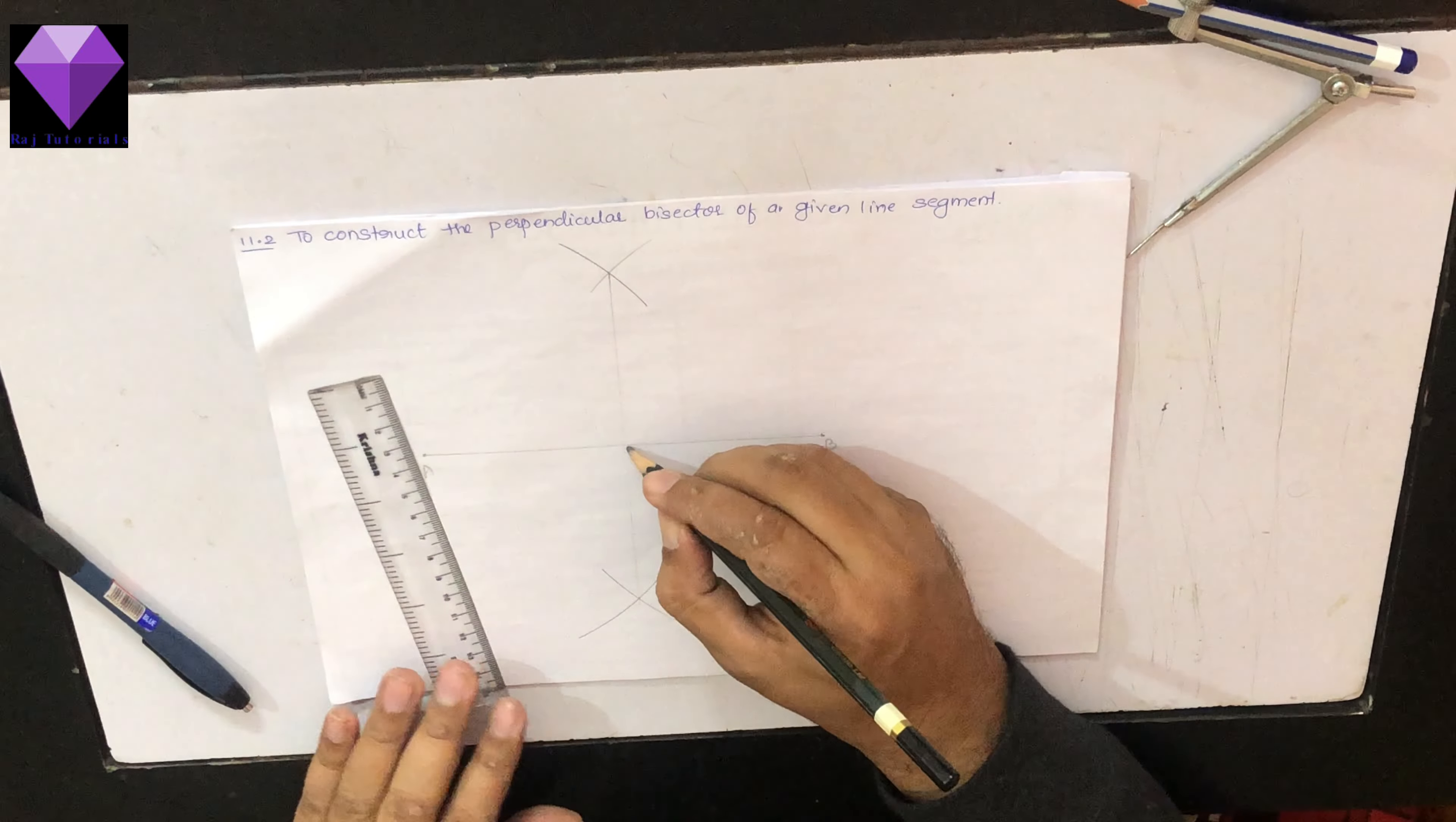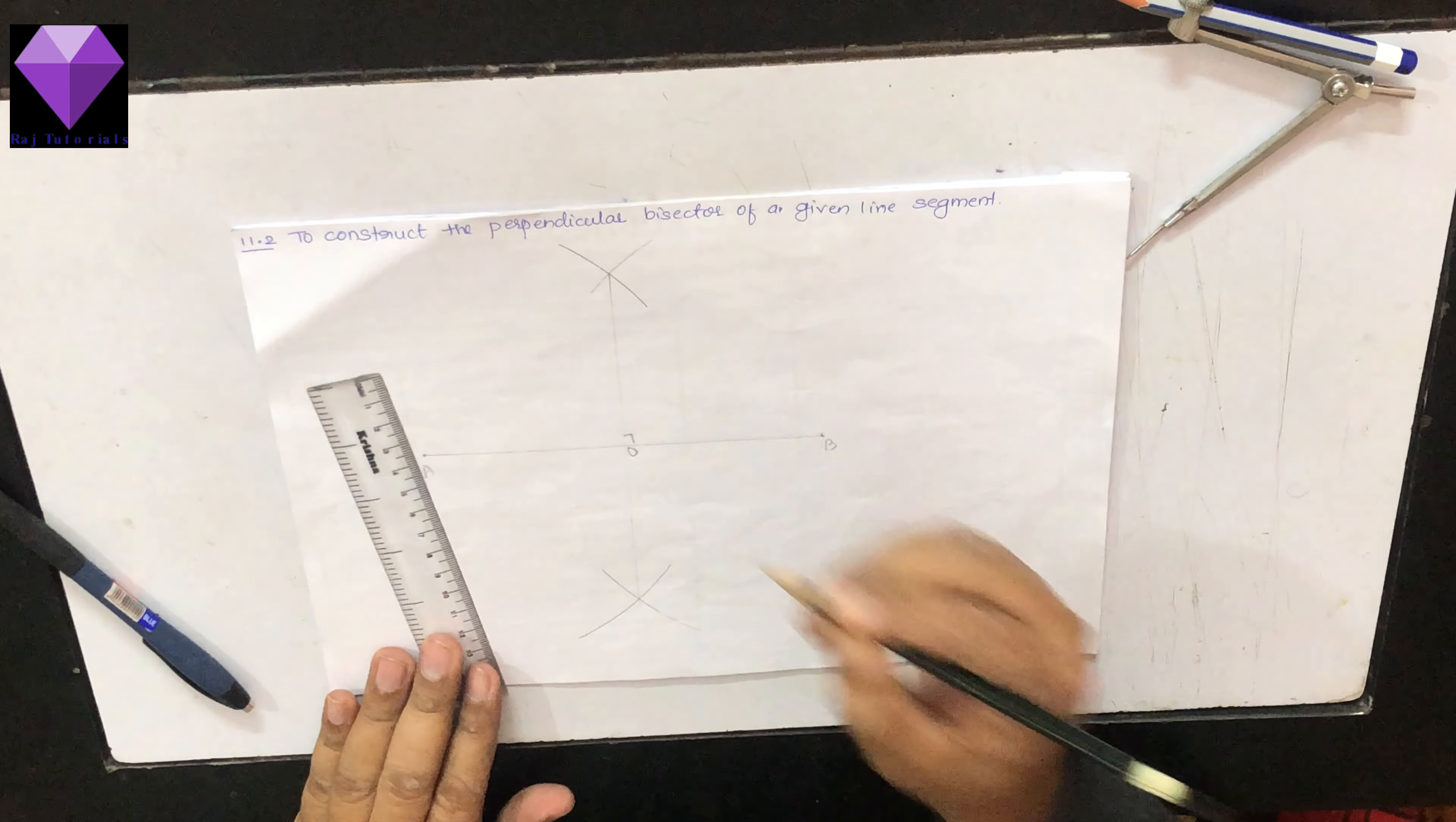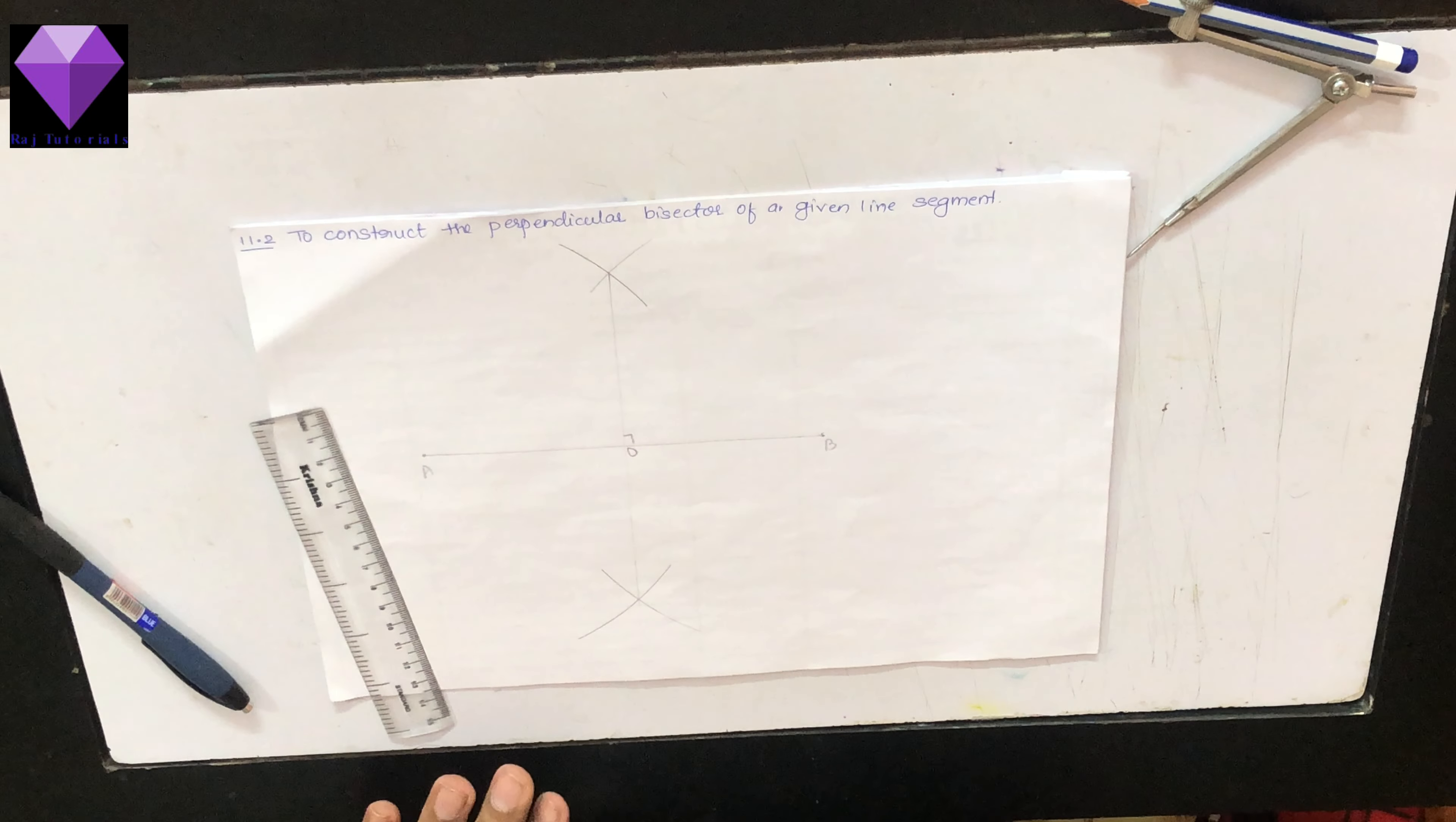So, this is my O point and this is my perpendicular bisector. Thank you.